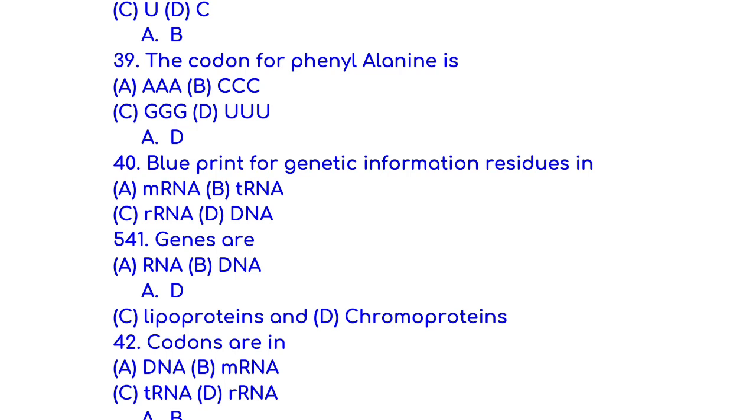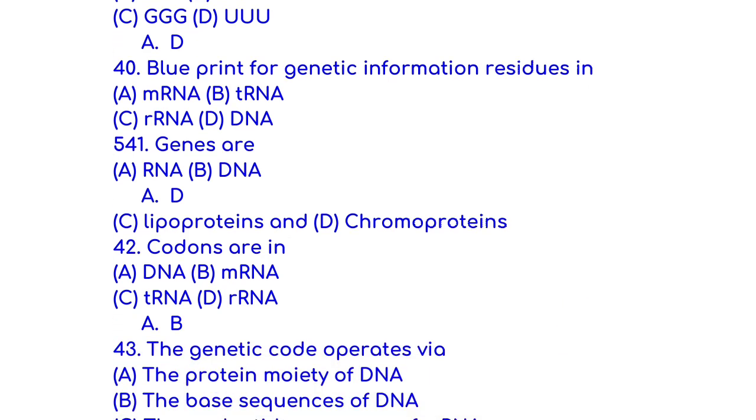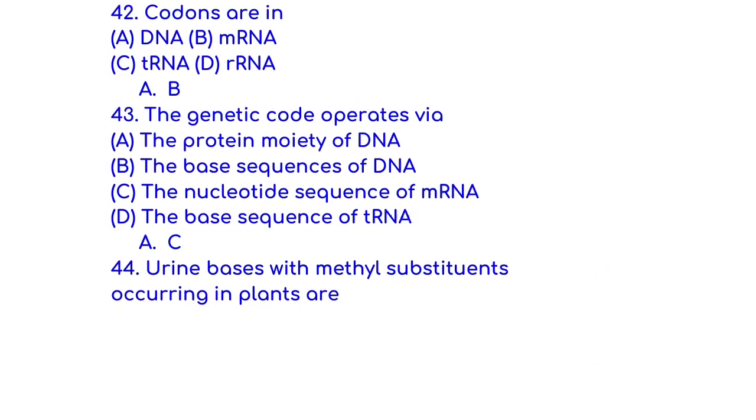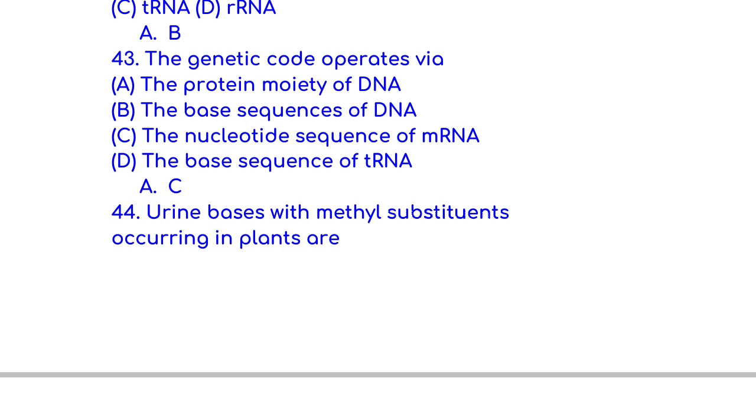The codon for phenylalanine is triple-U. Blueprint for genetic information resides in DNA. Codons are in mRNA. The genetic code operates via the nucleotide sequence of mRNA.